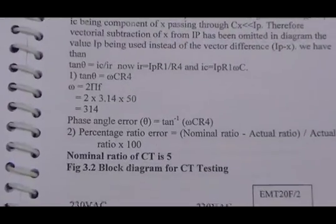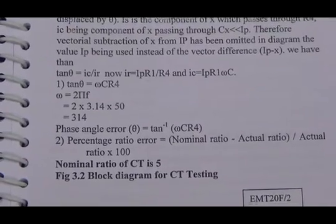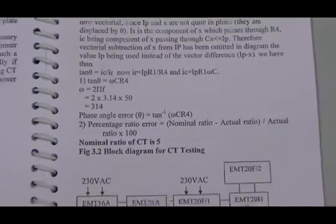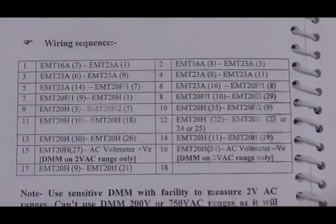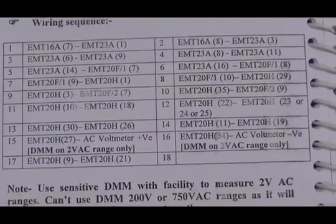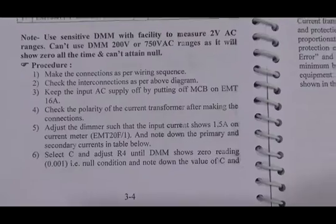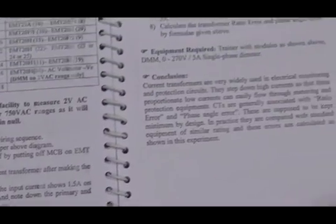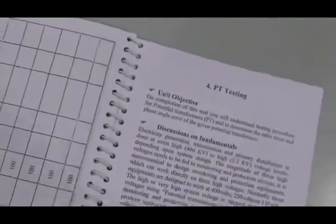Here are some mathematical calculations for ratio error calculation as well as phase angle calculation. So here is the wiring sequence given as per the panel model names. So make the wiring schedule first. After that, procedure is given which is step by step procedure. And here is the observation table for CT testing.